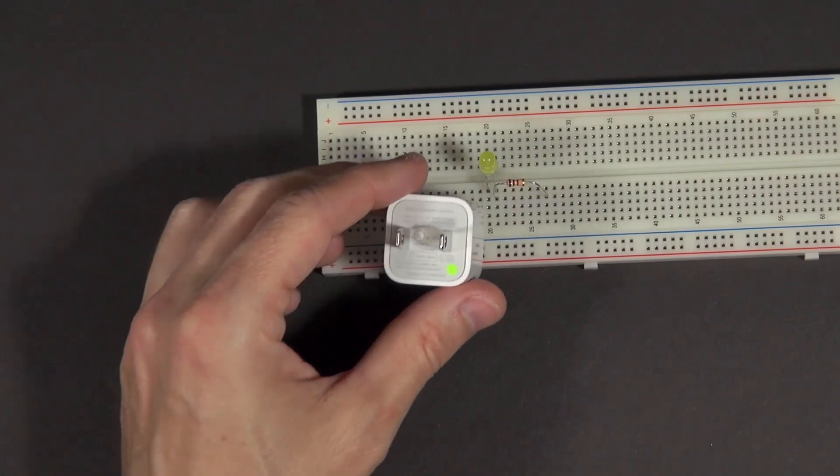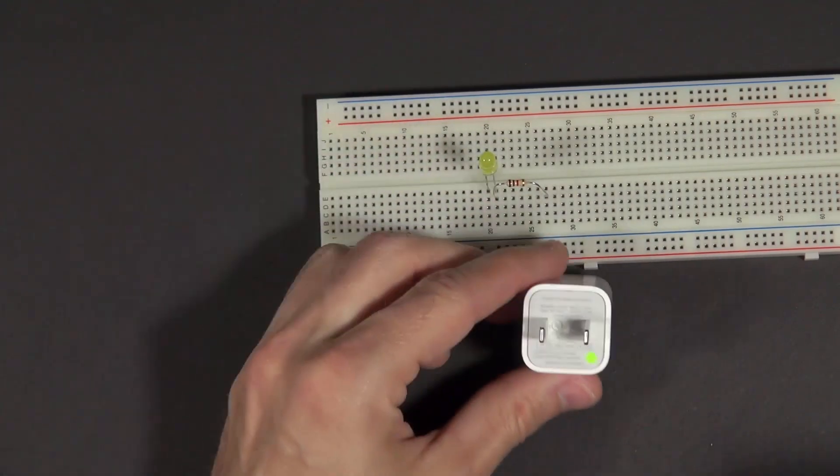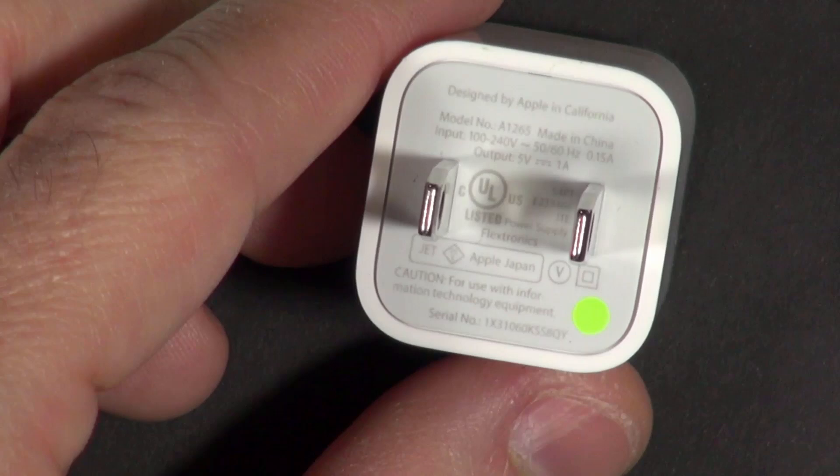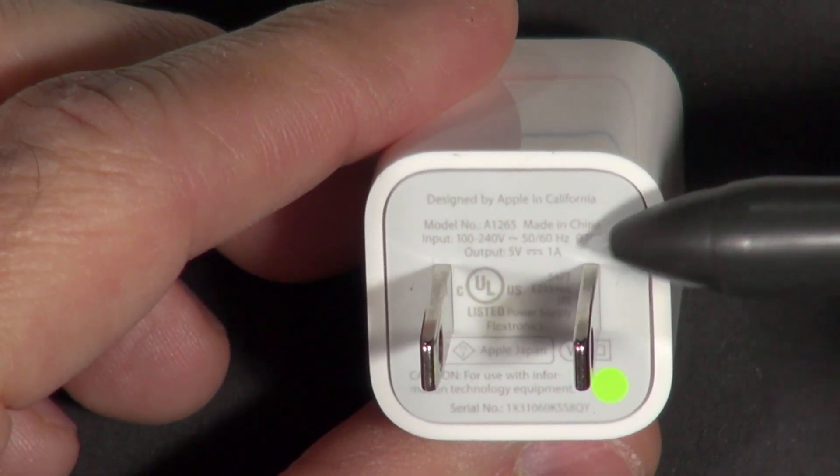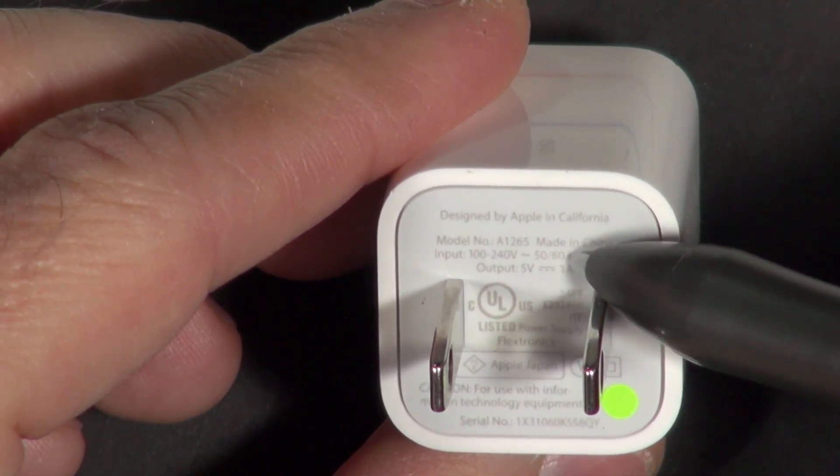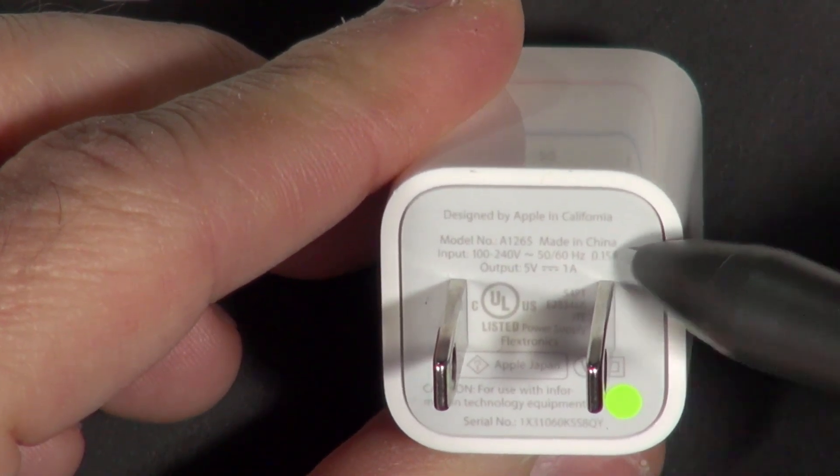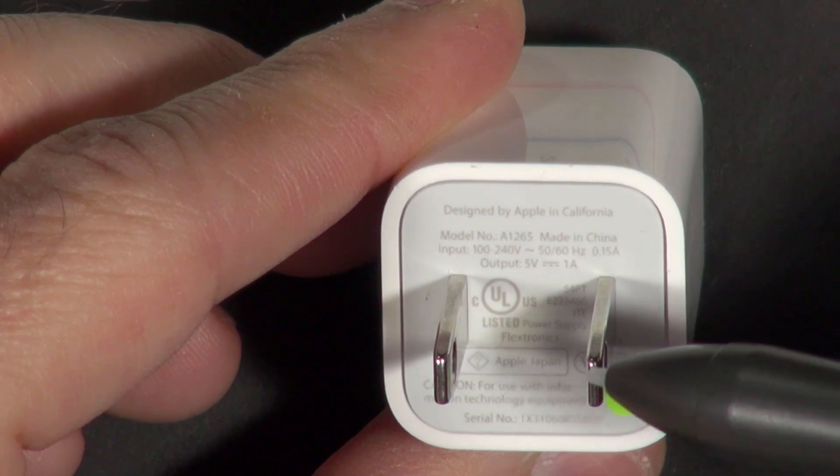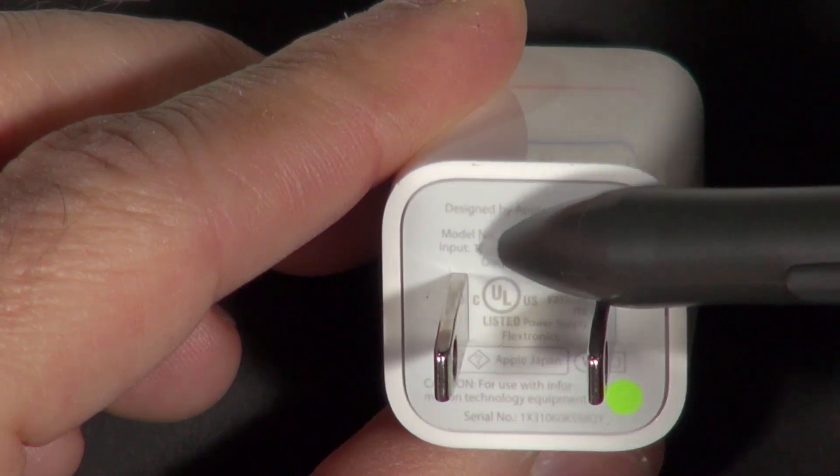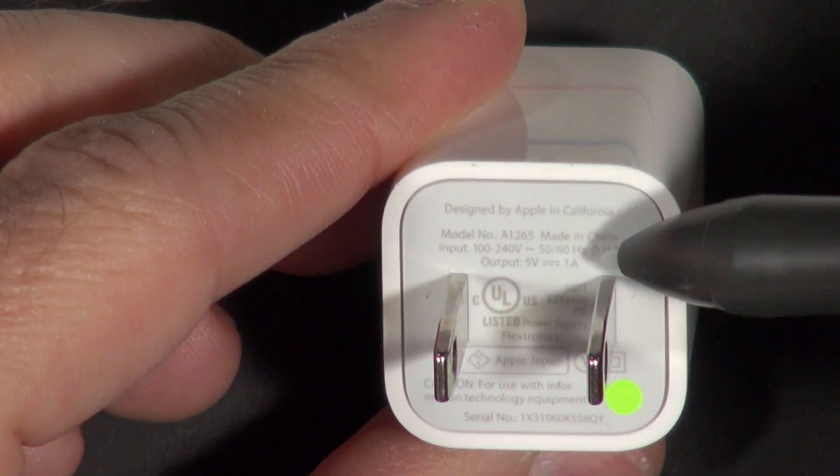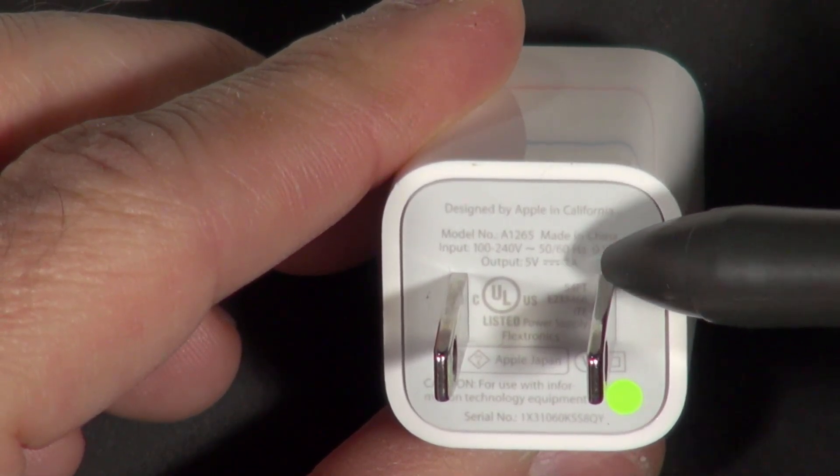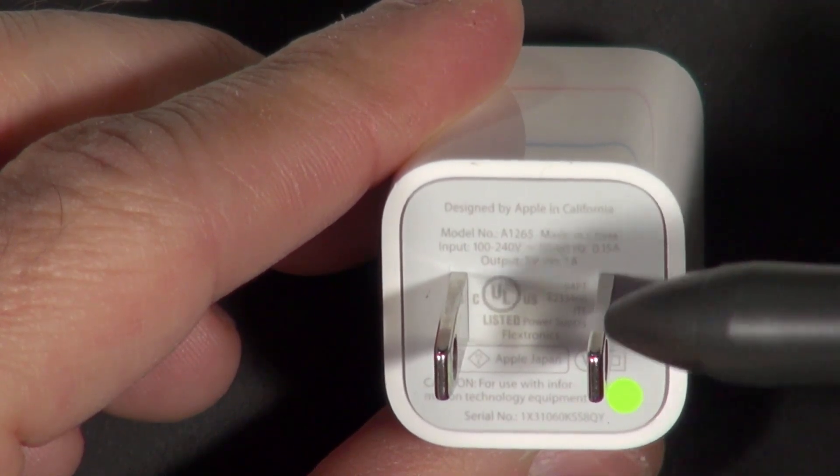Just to double check, if we take a close look at this, and you should check if you're using one of these, if we look very closely right here, it'll say input is 100 to 240 volts, 50 to 60 hertz at 0.15 amps. That matches what you would get from the wall power source in the U.S. or overseas, or really any country. The output is 5 volts, and this little symbol here means DC, direct current, which we want, 1 amp. So 5 volts at up to 1 amp is what we get out of this.